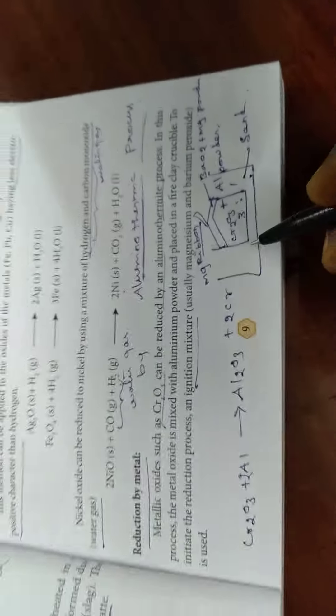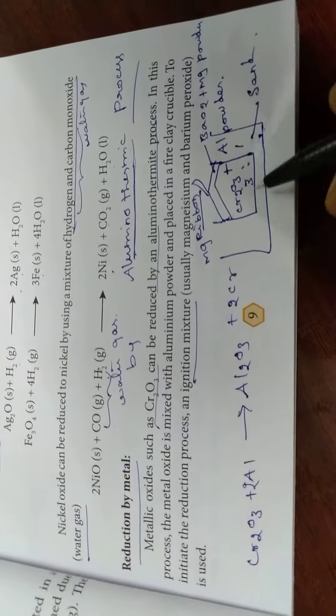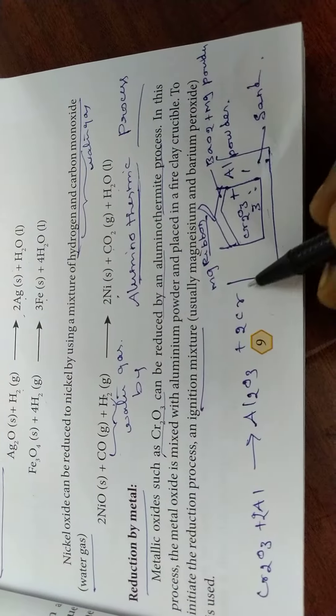Chromic Oxide - we explain the Aluminothermic process here. So look at this, the structure, the diagram, whatever I have written.